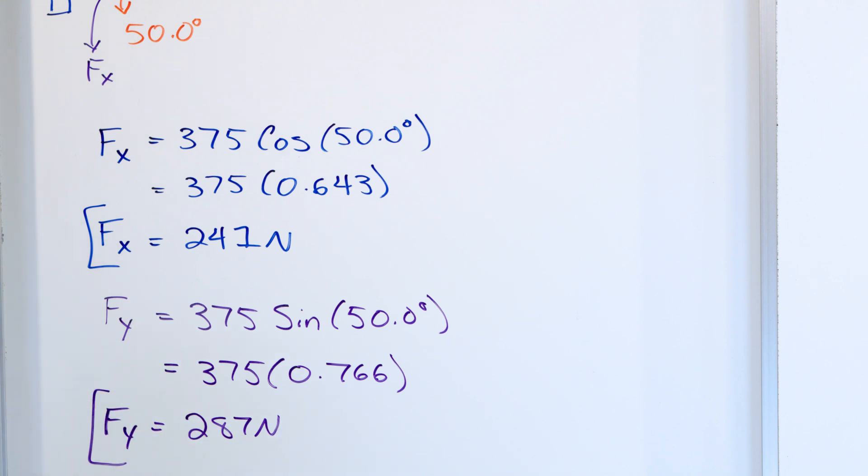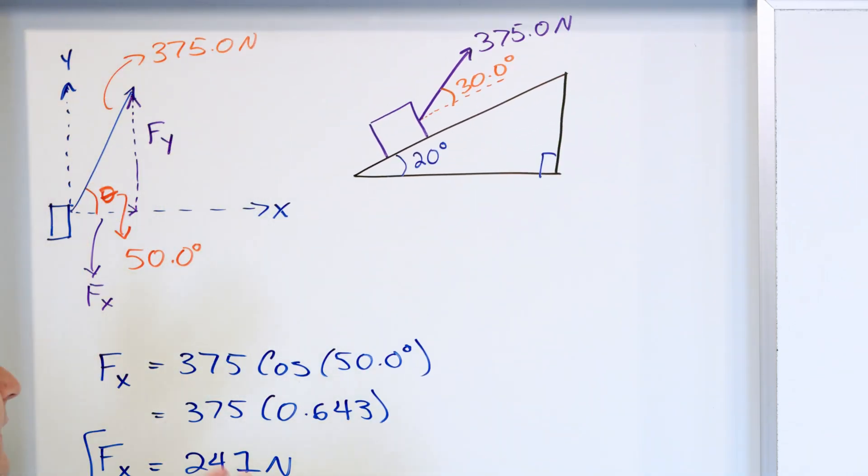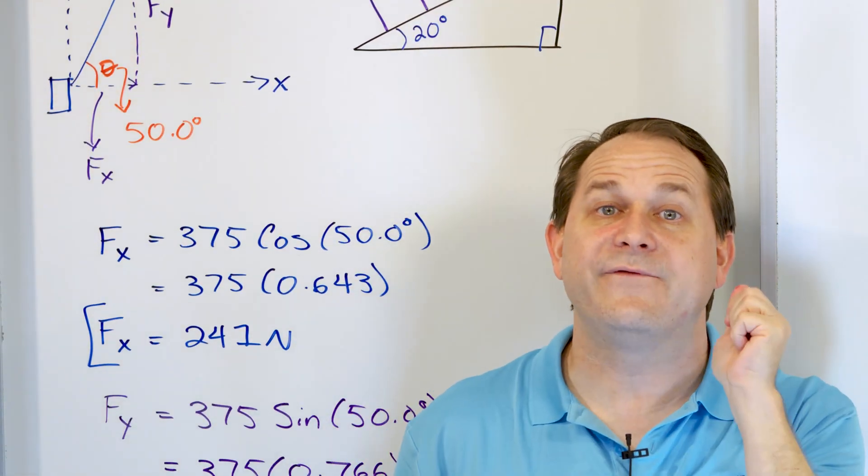But then you say, well, wait a minute, okay? If I add 241 plus 287, this is going to be already over 400 newtons. This is going to be already over 500 newtons. So how can that be? Because the X plus the Y, that's already more force than I had here. It's way more, so that can't be right. But this is the fallacy of that.